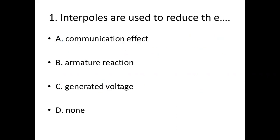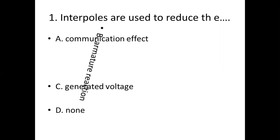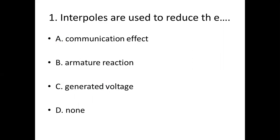First bit: Interpoles are used to reduce the dash. Option A: Communication effect. Option B: Armature reaction. Option C: Generated voltage. Option D: None. Answer — Option B: Armature reaction.